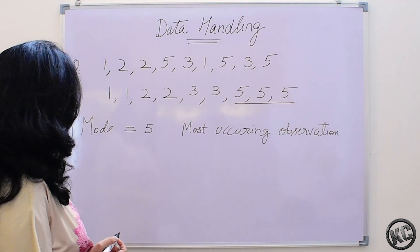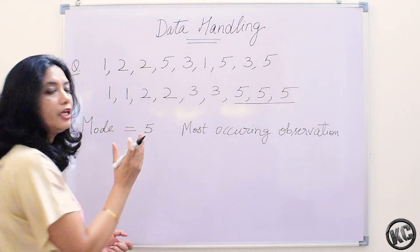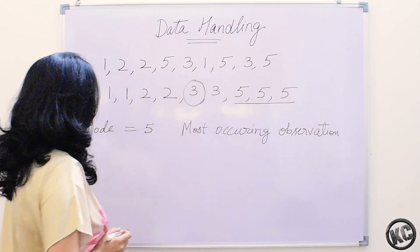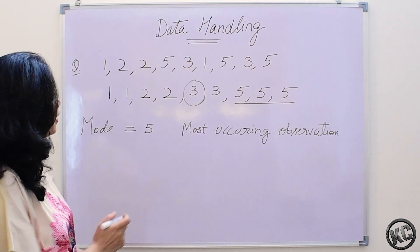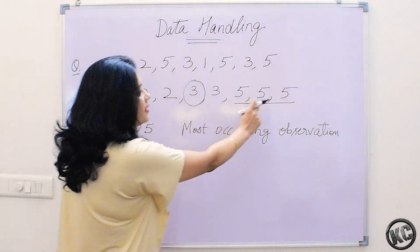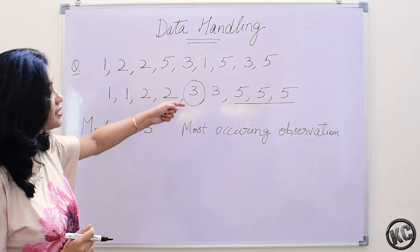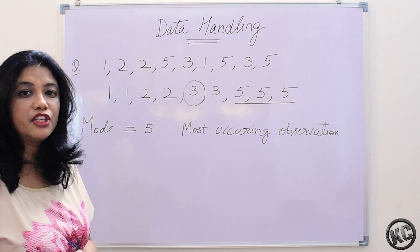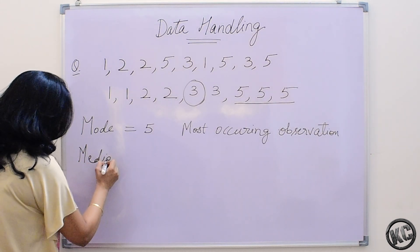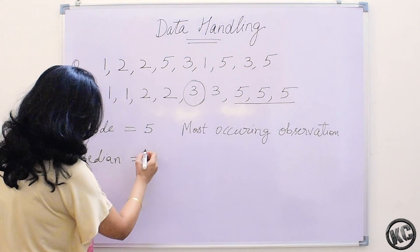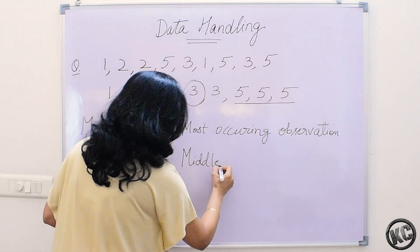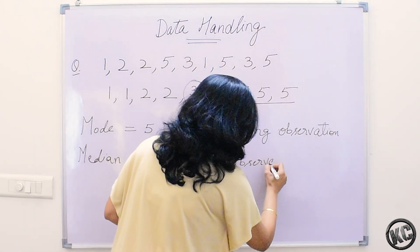Now let us see which is the middle number. Middle number means leaving equal observations on both sides — what we get. 3 is the middle observation. We have left 4 observations on one side and the other 4 on the other side. So this is the middle observation. This middle observation is called the median. Median is 3.